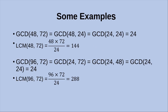Here are some examples of GCD and LCM. To find the GCD of 48 and 72, we apply the recursive algorithm. First we get GCD(48, 24), since 72 minus 48 equals 24. Then we get GCD(24, 24), since 48 minus 24 equals 24. When the two numbers are equal, that value is the GCD, which is 24. The LCM is equal to the product of the two numbers divided by the GCD: 48 × 72 ÷ 24 = 144.